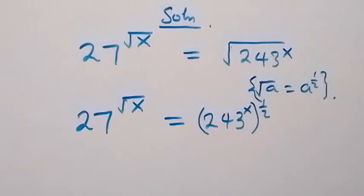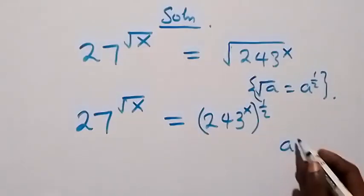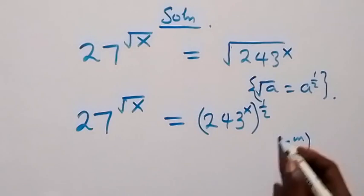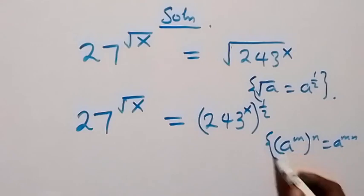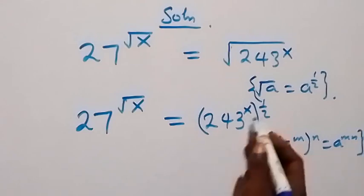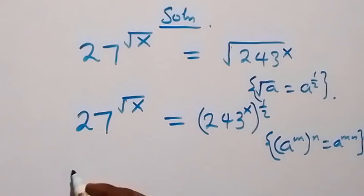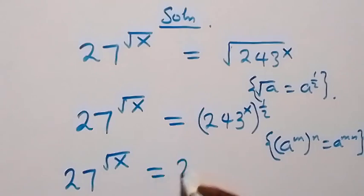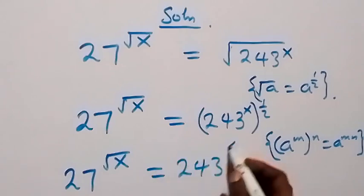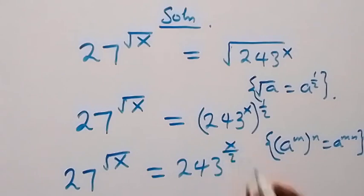Then from the law of indices, a raised to power m, raised to power n, is equal to a raised to power m times n. So applying this here, this becomes 27 raised to power root x, now equals to 243 raised to power x over 2.